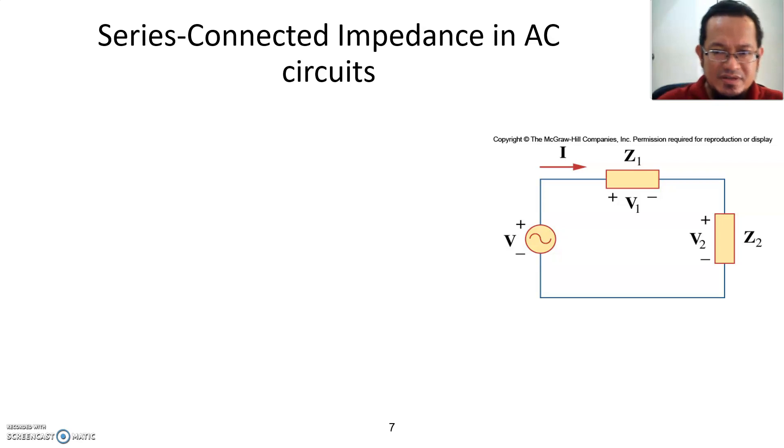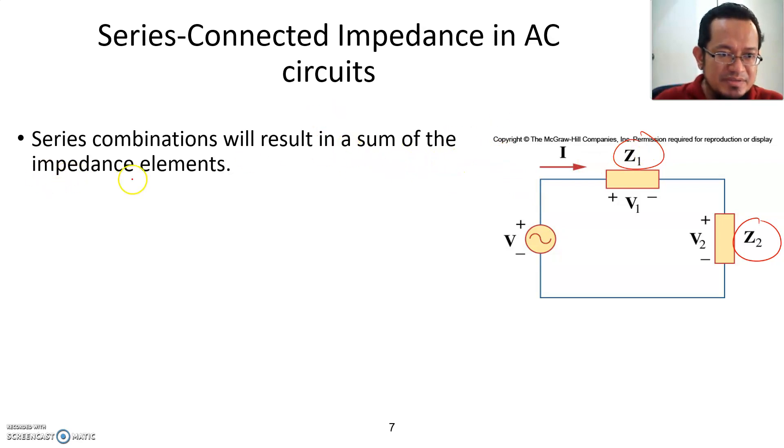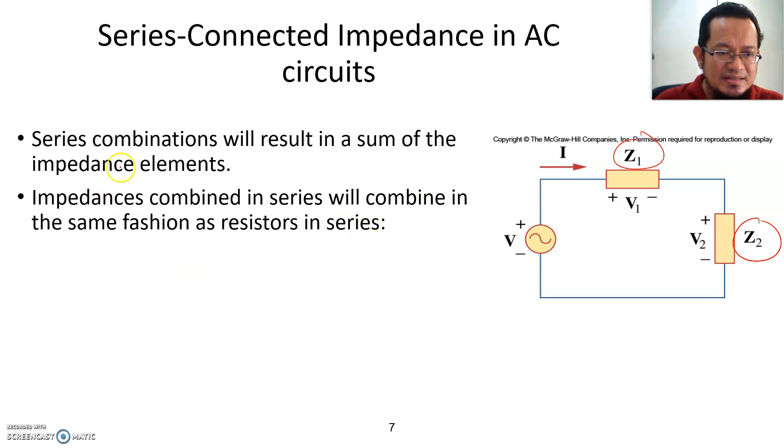Impedance can be connected in series and parallel. Let's talk about how to calculate series and parallel impedances. Let's say you have two impedances Z1 and Z2. These impedances can be resistance, inductors and capacitance, or resistance and inductors only, whatever combination between the three. Series combination will result in a sum of impedance elements. Impedance combined in series will combine in the same fashion as resistors in series. If you want to calculate the total impedance for Z1 and Z2, it's just a normal addition of all the impedance connected in series, just like connecting series resistors. We're going to see one example of this.